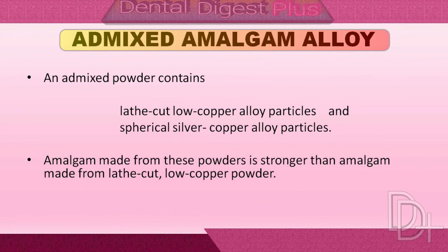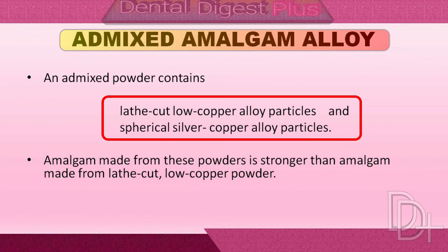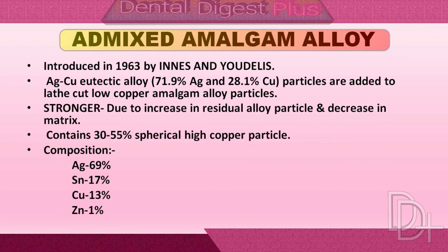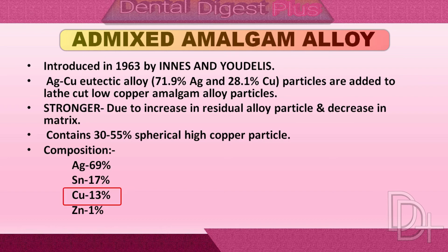Admixed alloy is a mixture of spherical silver-copper-eutectic alloy particles and lathe-cut low-copper amalgam alloy particles. In spherical silver-copper-eutectic alloy, silver is 71.9 weight percent and copper is 28.1 weight percent. The total copper content in admixed alloys ranges from approximately 9 weight percent to 20 weight percent.